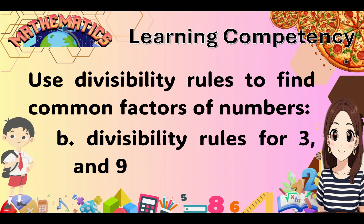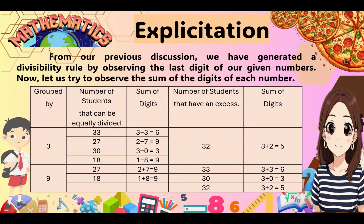We will explain divisibility rules for 3 and 9. From our previous discussion, we generated a divisibility rule by observing the last digit of our given numbers. Now let us try to observe the sum of the digits of each number — not the last digit, but the sum of the digits. Here are numbers grouped by 3 and numbers grouped by 9, meaning these numbers can be equally divided by 3, while these numbers can be equally divided by 9.